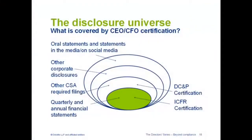Let's talk first about disclosure. In our CPA Canada publication, Alan and I developed an analysis of the layers of disclosure. At the center, in the shaded circle, are the quarterly and annual financial statements. The next layer out is other required disclosures — the MD&A, the AIF, the proxy circular, timely disclosure releases. The third layer out is voluntary reports: health and safety, environmental, social responsibility reports. And then the outside layer is the world of Twitter, social media, blogs, and chat rooms.